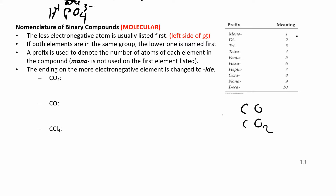We have mono, di, tri, tetra, and after that it's like the names of shapes — a pentagon has five sides, a hexagon has six. So you probably know most of these. We only have to know up to ten: mono, di, tri, tetra, penta, hexa, hepta, octa, nona, deca.